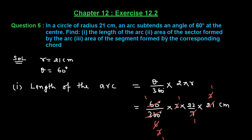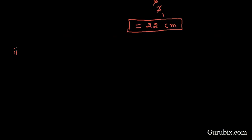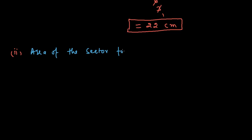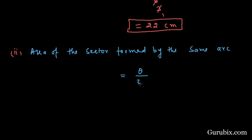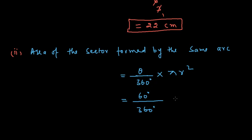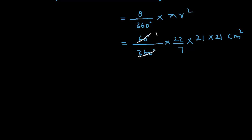Now we have to find the area of the sector formed by the arc. The area of the sector is given by the formula: theta over 360 degrees times πr². Substituting: theta is 60 degrees over 360 degrees times 22/7 times 21 times 21 centimeter square.